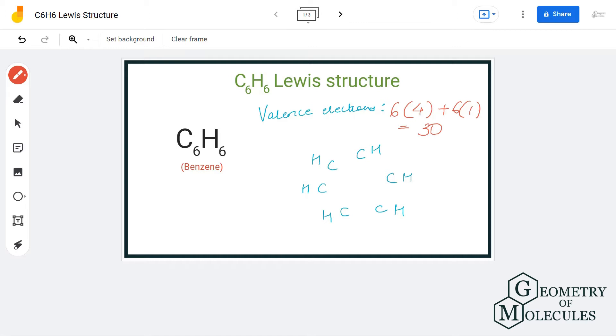Now the arrangement of the atoms will be different from linear molecules because this is a cyclic molecule. The carbon atoms will be arranged like this, and each hydrogen atom will form a bond with one carbon atom. So let's place hydrogen atoms like this.